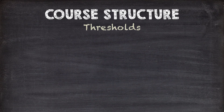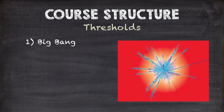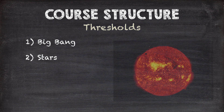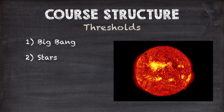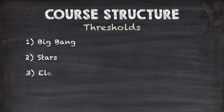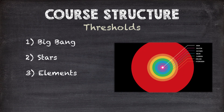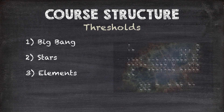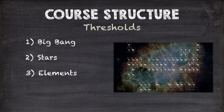The first of these thresholds is the Big Bang. All of the matter and energy in the universe came from this instant. About 400,000 years later, the first stars lit up. As the stars burned, new elements were formed, but it's actually in their fiery death that we find all of the elements that exist today. That's our third threshold.